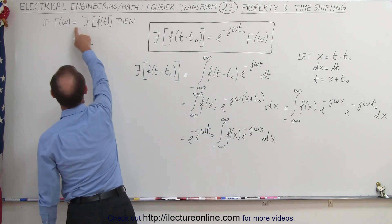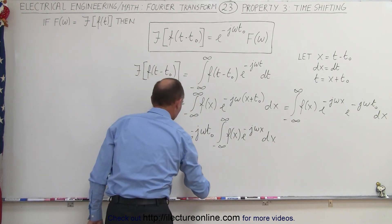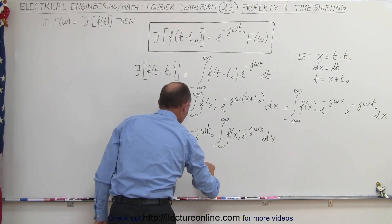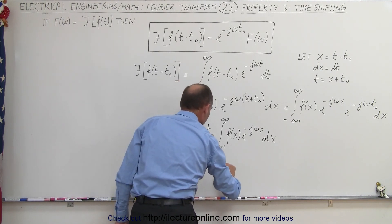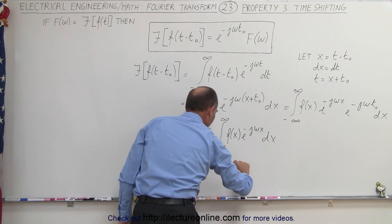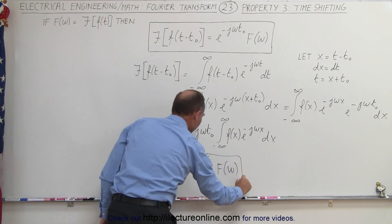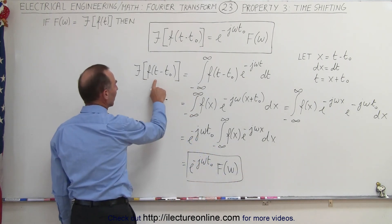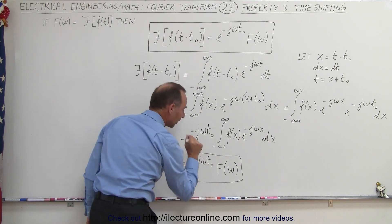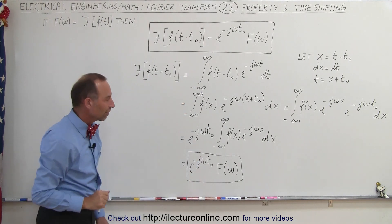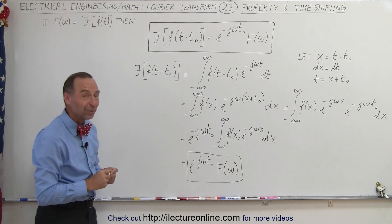We can replace it by that, so this becomes equal to e to the minus j omega t sub-naught, times the Fourier function of the frequency. So you can see that all we have to do is make a shift in time on the input function, and we'll get a shift in the frequency on the output of the transform, and that's how we do that.